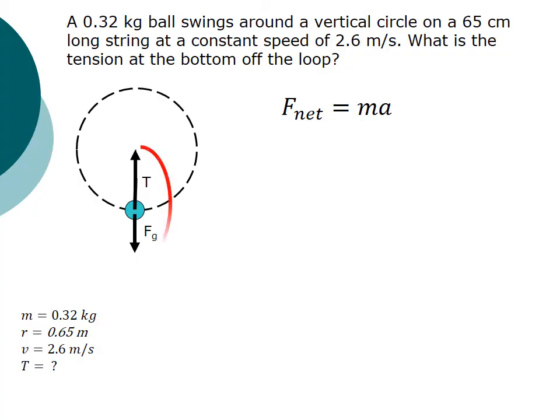F net equals ma. Again, we're going to use centripetal acceleration and the F net to customize it. Before we do, it's worth pausing for a moment and asking ourselves, what is this really? F net, right? I have tension up, force of gravity down. If I were to add these two together, the net force should be the magnitude of tension minus the magnitude of the force of gravity, because they're in opposite directions, and one of them should be negative.